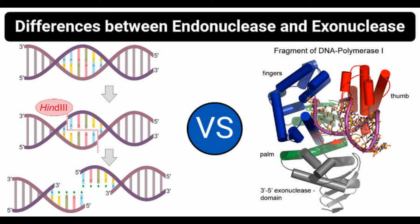Regarding specificity: specific endonucleases, also called restriction endonucleases, cleave specific sites within a DNA sequence, whereas exonucleases are usually non-specific. Regarding defensive properties: endonucleases have defensive properties against pathogenic microorganisms, while exonucleases do not. Regarding circular DNA: restriction endonucleases can cleave specific sites within circular DNA, while exonucleases have less activity towards circular DNA compared to linear. Regarding inhibition: endonucleases cannot be inhibited by phosphorothioate bonds unless the entire sequence contains them, while exonucleases can be inhibited by adding five phosphorothioate bonds in a row. Regarding free ends: free 3' or 5' ends are not necessary for endonuclease action, but ends must be free for exonuclease action.